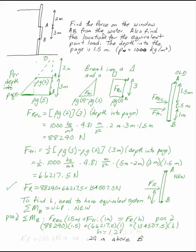And then don't forget to answer the question. Fr is 155 kilonewtons to the right at 1.29 meters above B.